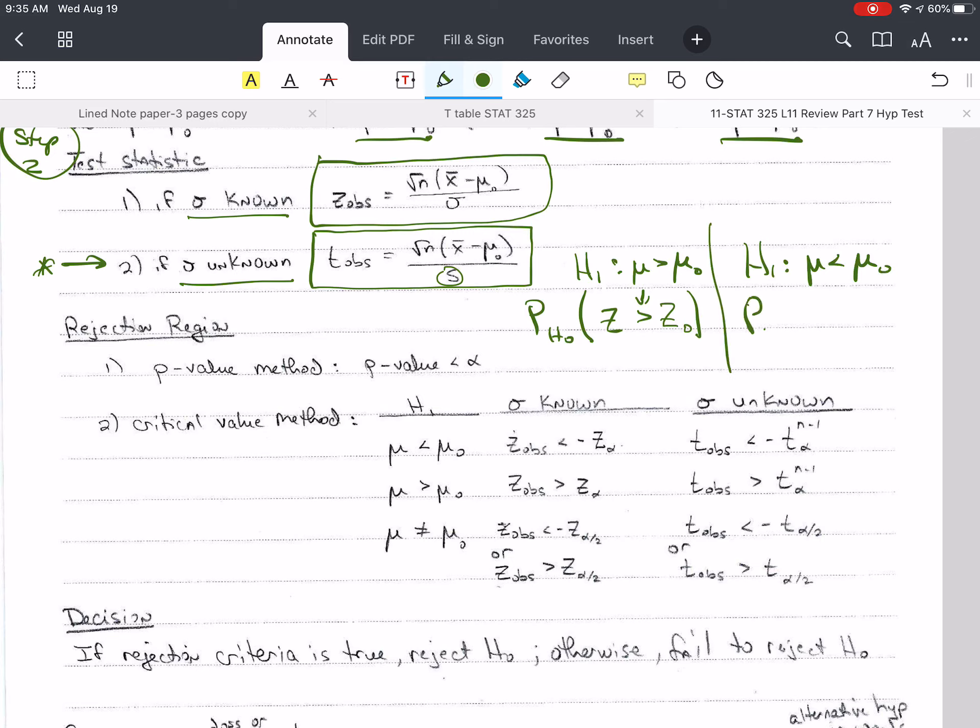If we have mu less than mu-naught, then we'd have the probability under H-naught that Z is less than Z-naught. And if we have not equal to,